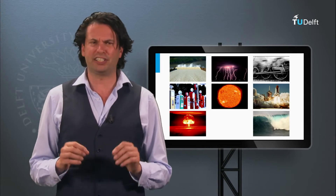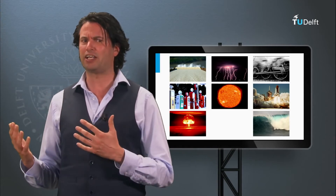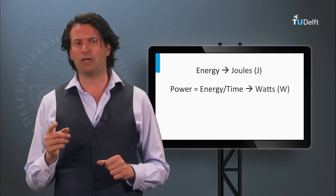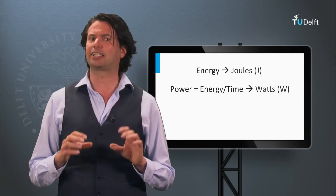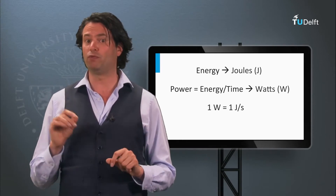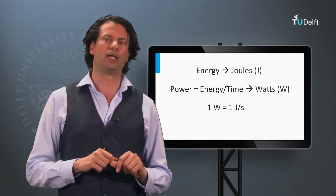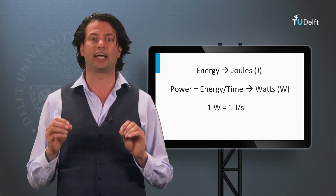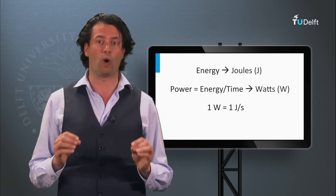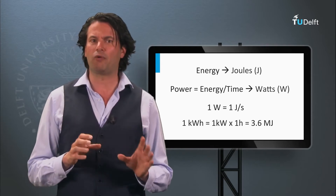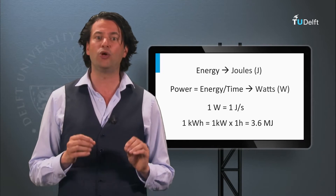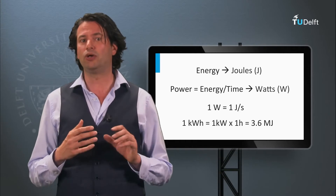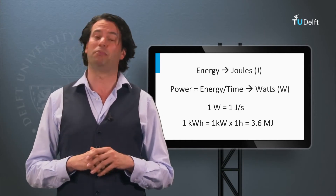An example is the electric motor — a tool in which we convert electrical energy into mechanical energy. The unit of energy is joule. Power is the energy per time and is expressed in watts. One watt is one joule per second. In this course we will use a more practical unit, kilowatt hours. One kilowatt hour equals the energy of a power of one kilowatt being used for one hour, which equals 3.6 million joules.